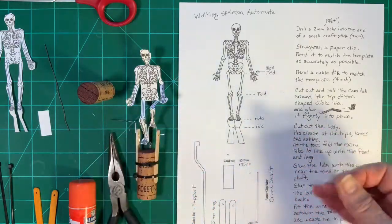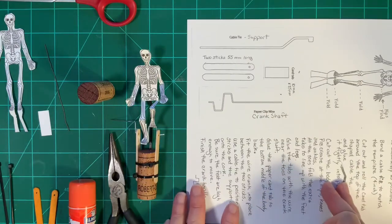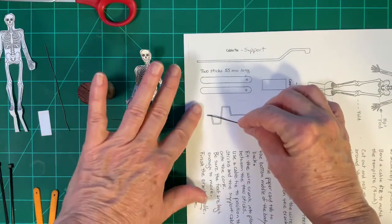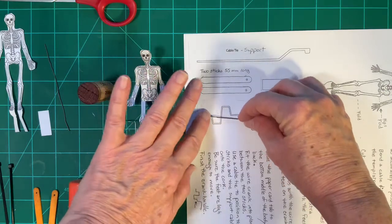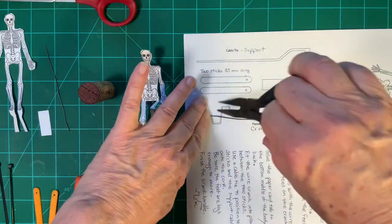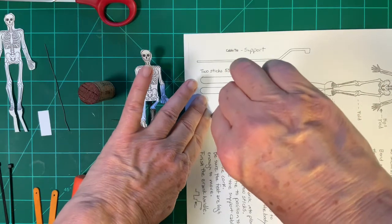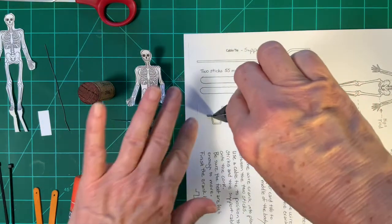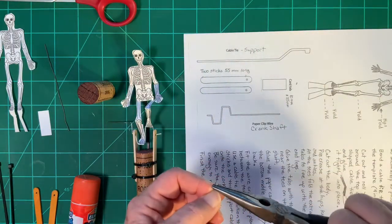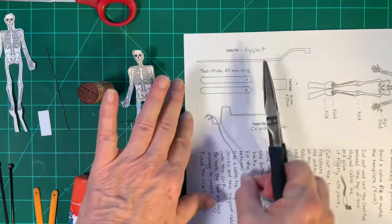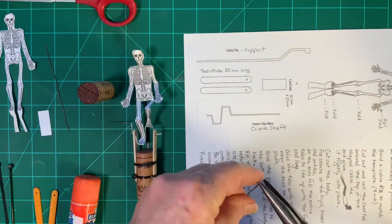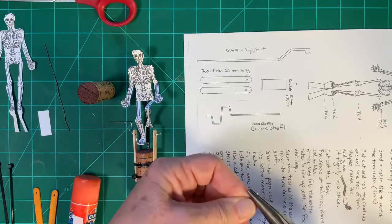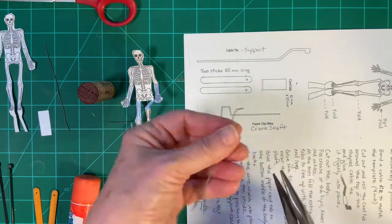Once you get it straightened, you're going to use the template to make the crankshaft. Set your paper clip on the template, use your pliers to grab next to where you want to bend it, like so, and then bend. We want to start at this end because the handle is not as important how long it is. Make a nice bend.